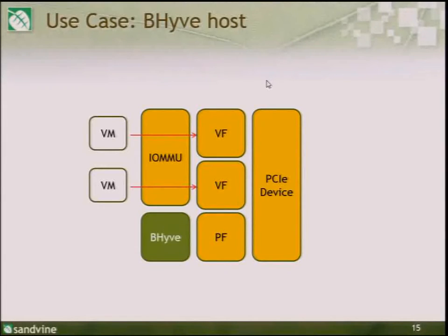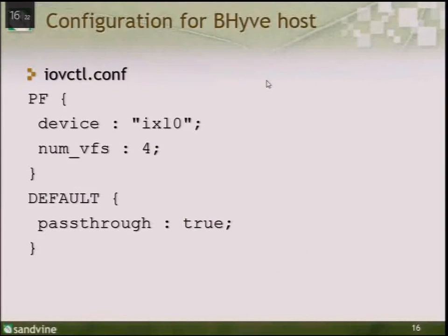Going over a couple of potential use cases. The first is Beehive: FreeBSD attaches to the PF, VFs are created and passed through to VMs. In the configuration, you set passthrough to true either in the default section or on individual VFs. Then you use the PCI pass-through flag to Beehive — depending on whether you're using vmrun or running Beehive directly, the syntax changes. It shows up as a PCI device and you pass the bus-slot-function triplet to Beehive and it maps it in.